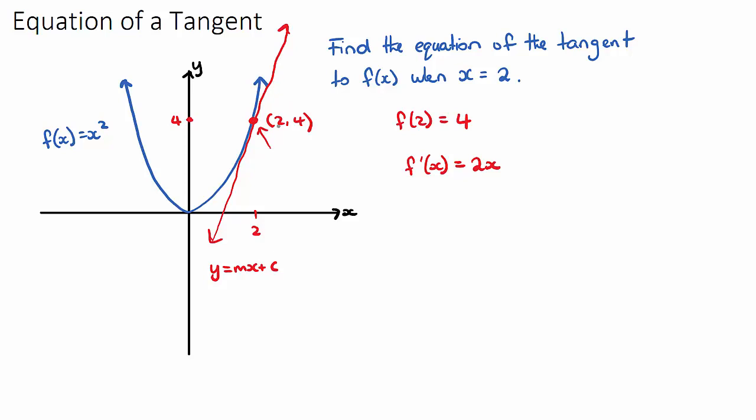And that exact point has the x value of 2. So if I sub in 2 into my derivative, I'll get 2 times 2, which is 4. And what that means is the gradient, which is m, of the tangent when x equals 2 was 4. And now that we have the gradient at this dot here, this red dot, and we also know the x and the y value at that dot, we can use the equation of a straight line to find the equation of a tangent.